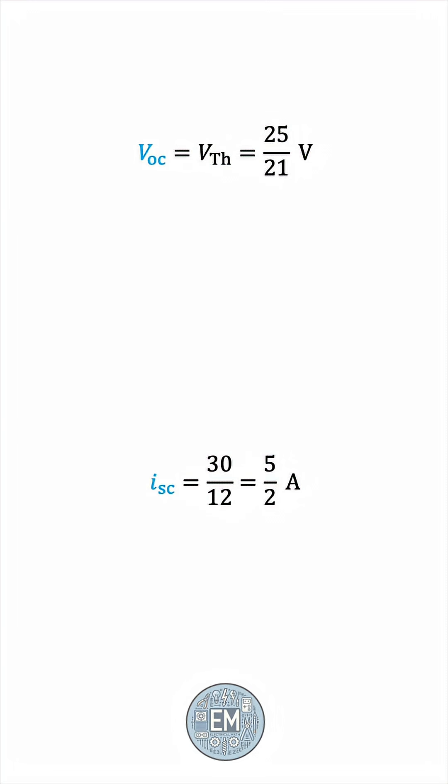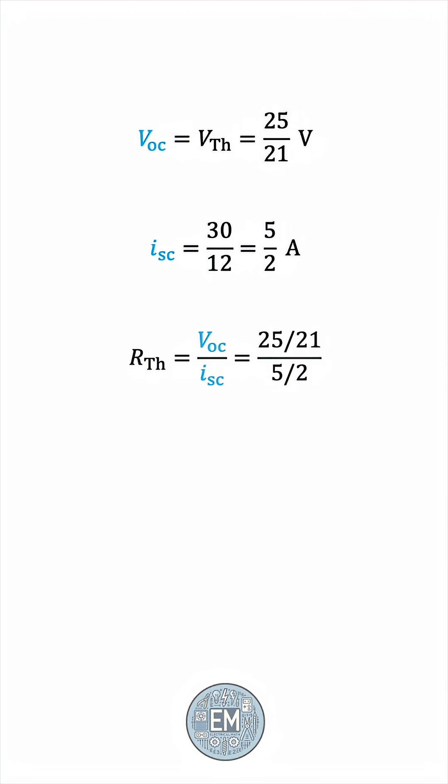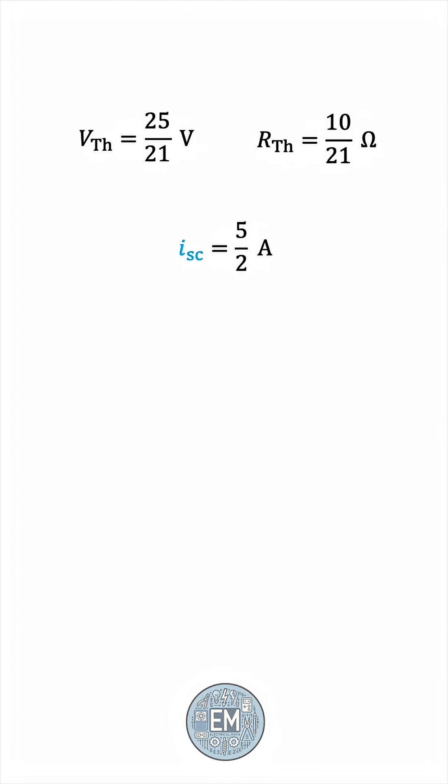Now, we can find the Thevenin resistance by dividing the open-circuit voltage by the short-circuit current. This gives us 10 over 21 ohms. And with this, we can find the Thevenin equivalent of the circuit, a source of VThevenin and a series resistance of RThevenin.